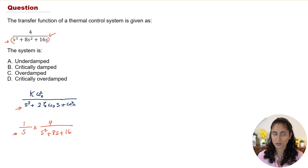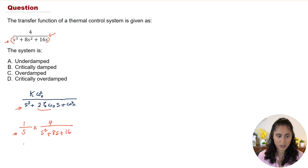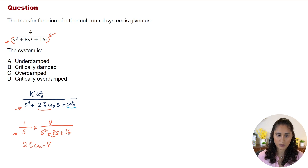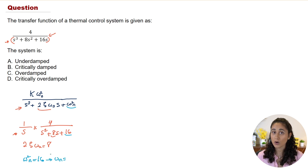We want to determine zeta. Matching terms, we set 2·ζ·ω equal to 8. But before solving for the damping ratio, we first need to find ω. We set ω² equal to 16, so ω equals the square root of 16, which is 4.